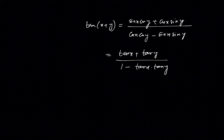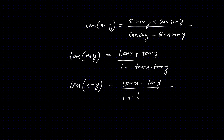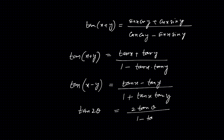And then for tan of x minus y, it is tan x minus tan y divided by 1 plus tan x into tan y. For tan of 2 theta, it is 2 tan theta divided by 1 minus tan squared theta.